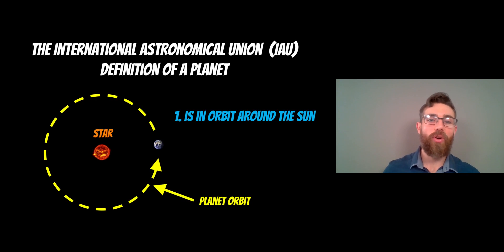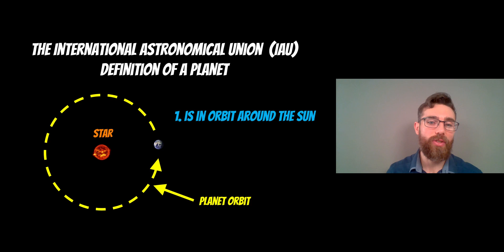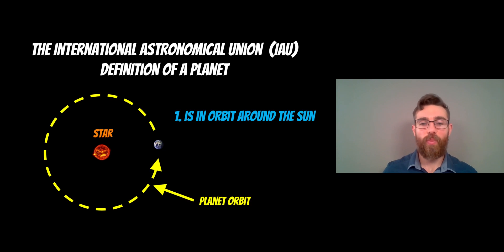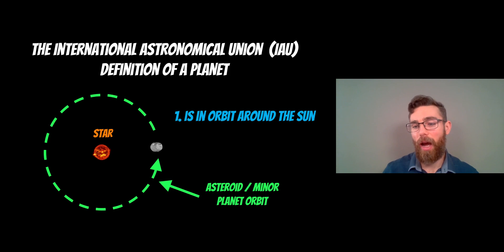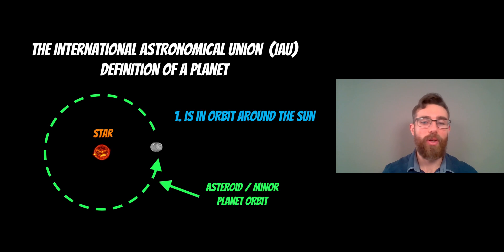There are basically three main criteria defined by the International Astronomical Union as to what makes an actual planet. The first one is a fairly obvious one: it has to be in an orbit around the Sun. In our solar system it has to orbit the Sun — if we're talking about another planet, it would be orbiting a star. However, an asteroid or minor planet might meet this same criterion, since minor planets, dwarf planets, and asteroids still orbit the Sun. So we need to look at the rest of the criteria.